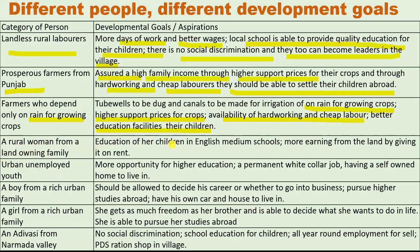A rural woman from a land-owning family may aspire to have her children educated in an English medium school. As a prosperous family, they may also think about earning more from their land by giving it on rent, expecting higher rent returns.